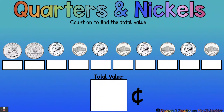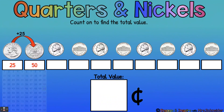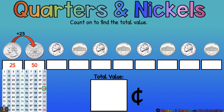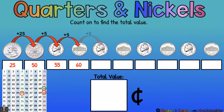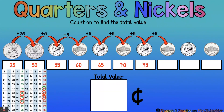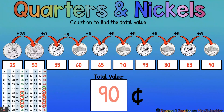Let's count our quarters first and then count by fives. One quarter is 25, two quarters is 50. Now start counting by fives: 55, 60, 65, 70, 75, 80, 85, 90. So the total value of our coins is 90 cents. Good job.